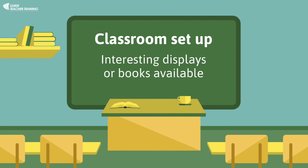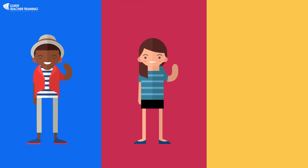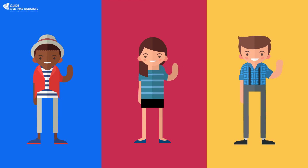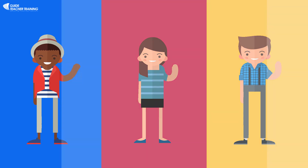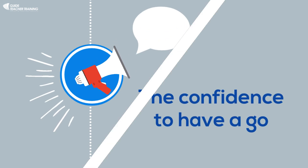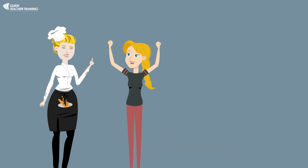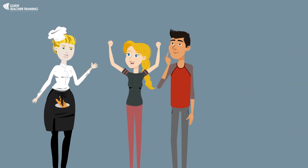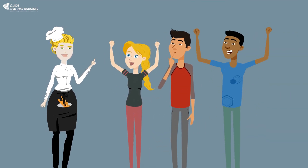Let's use confidence as another example. You have to make it okay for students to get things a little wrong or to go a little over in time. This gives students the confidence to have a go. If I was teaching cooking I'd want quite a lot of curiosity and students to have the confidence to try different things.